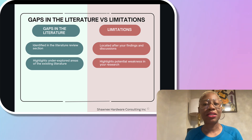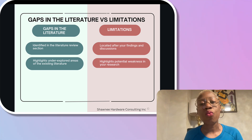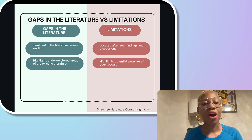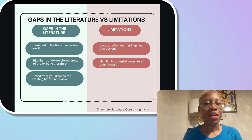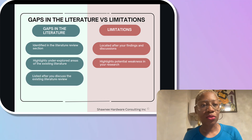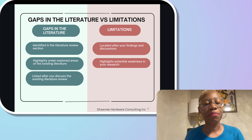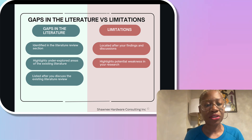The limitation section highlights potential weakness in your particular research and not the literature that you've reviewed. Also connected to the gaps in the literature, as I mentioned above, this is listed after you've discussed the literature.